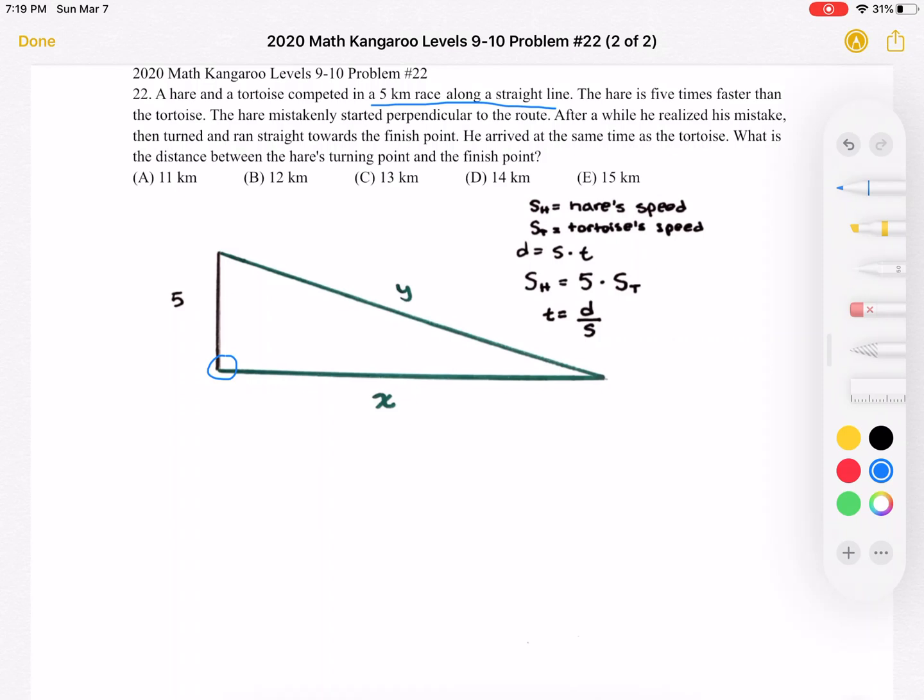We want to find the distance between the hare's turning point, so here, and the finishing point. So we want to find what I've marked as Y. And I've marked this horizontal distance as X. We don't know what it is, but that's the distance between the starting point and the point where the hare turns around.